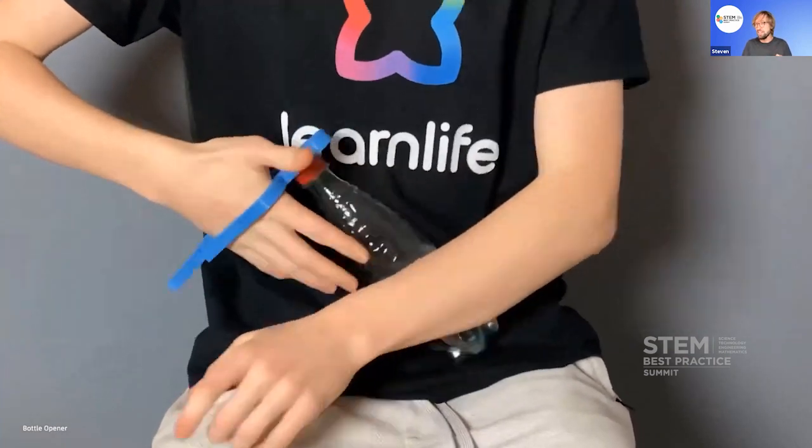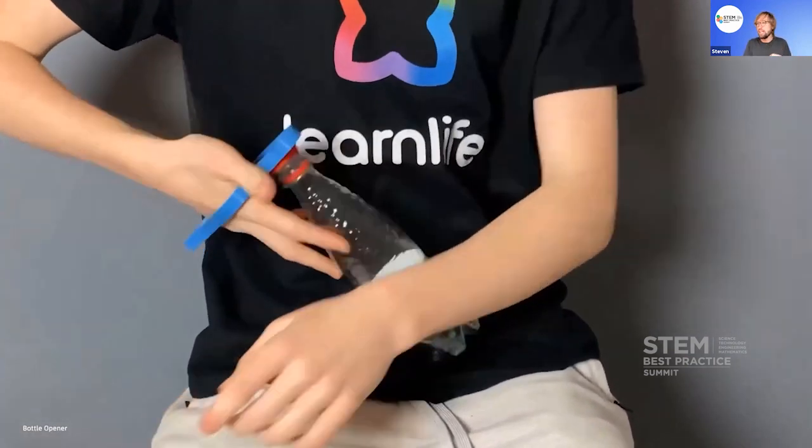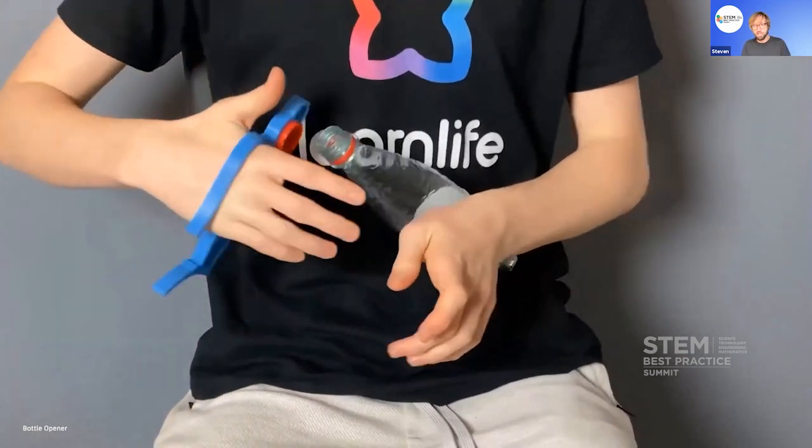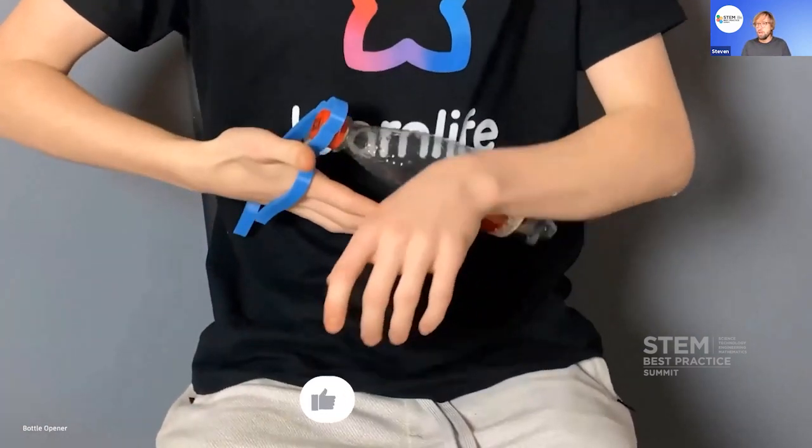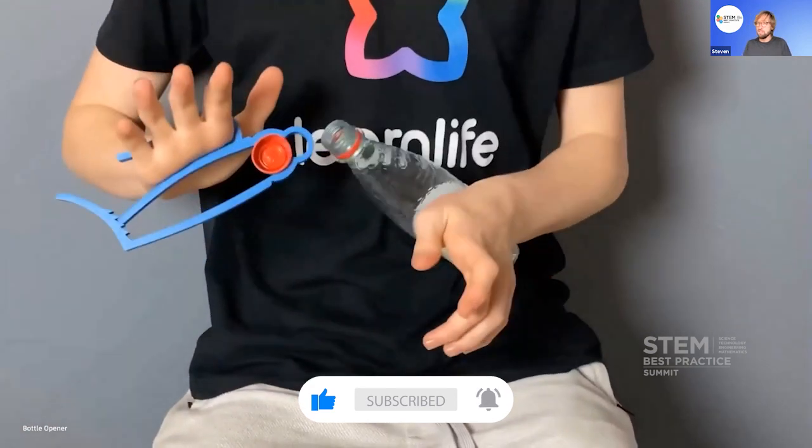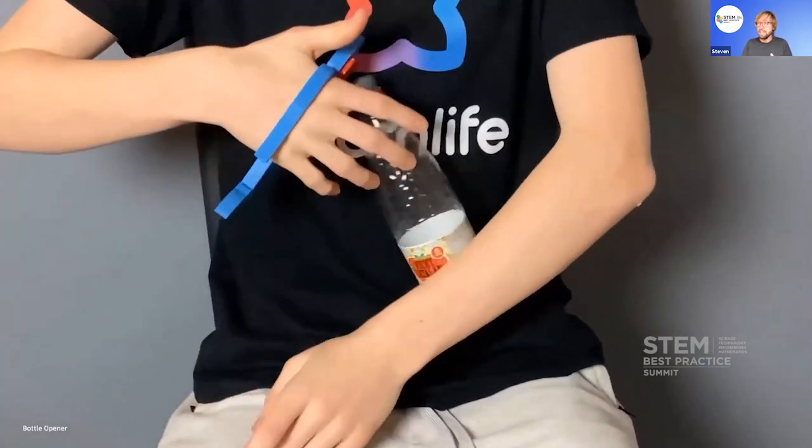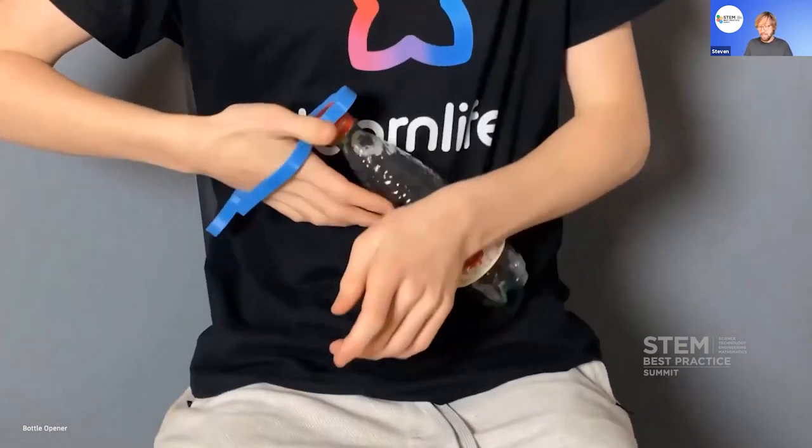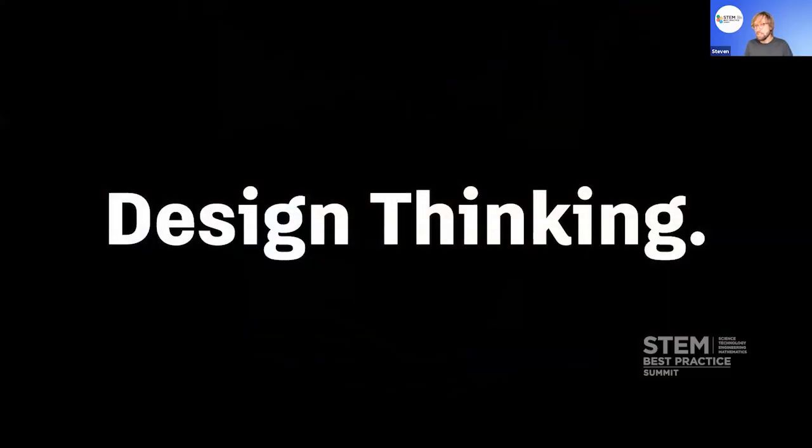And finally, this is Gary, a C6 quadriplegic. Something we all take for granted—opening a bottle—was such a challenge for Gary. Students watched how he works and what he was able to do and created, using Fusion 360, an Autodesk tool and additive manufacture, something that can help him open bottles again. We all take that for granted.